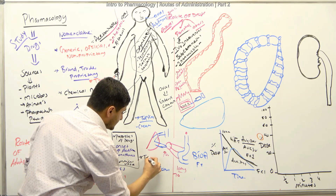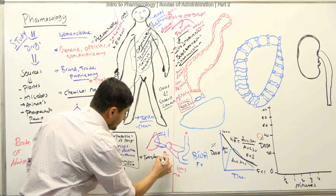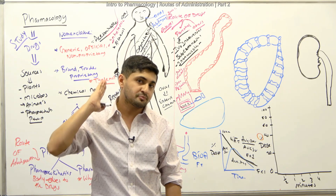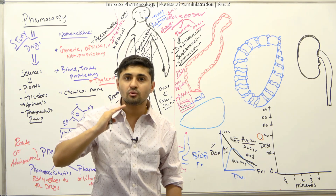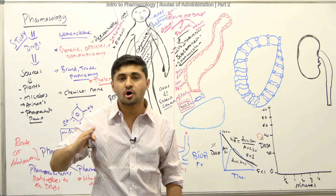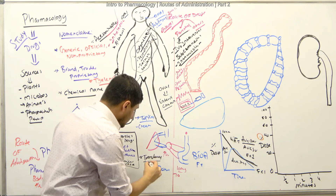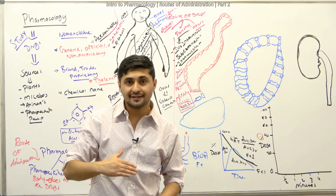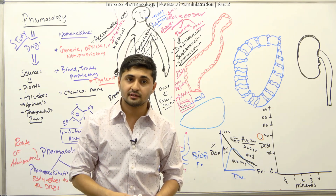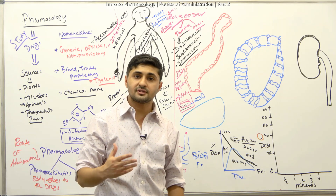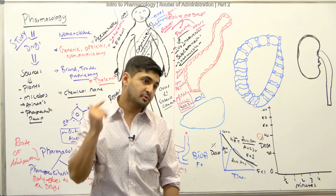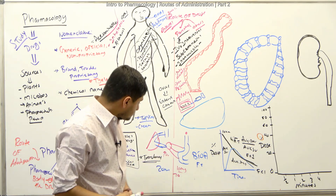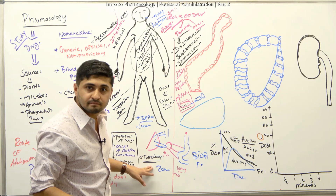After topicals, we have transdermal patches. Transdermal means you apply a patch to the skin, and the drug is slowly absorbed over a long period of time. For example, if you have motion sickness, a patch is placed on the skin to help avoid motion sickness. That is how transdermal drug delivery works.